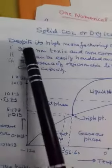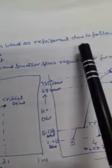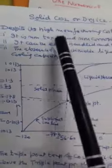Now I'm going to deliver a lecture on solid carbon dioxide or dry ice. Despite its high manufacturing cost, it is used as a refrigerant due to the following reasons.